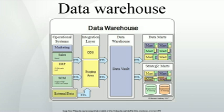Data warehouses versus operational systems. Operational systems are optimized for preservation of data integrity and speed of recording of business transactions through use of database normalization and an entity relationship model. Operational system designers generally follow the Codd rules of database normalization in order to ensure data integrity. Codd defined five increasingly stringent rules of normalization. Fully normalized database designs, those satisfying all five Codd rules, often result in information from a business transaction being stored in dozens to hundreds of tables. Relational databases are efficient at managing the relationships between these tables. The databases are very fast in insert-update performance because only a small amount of data in those tables is affected each time a transaction is processed. Finally, in order to improve performance, older data are usually periodically purged from operational systems.